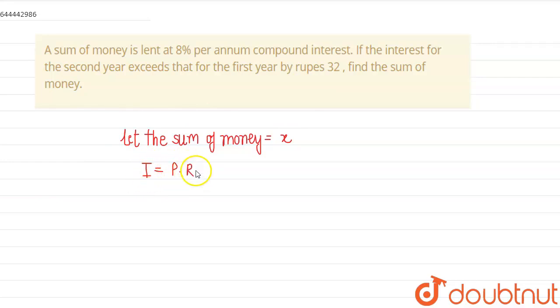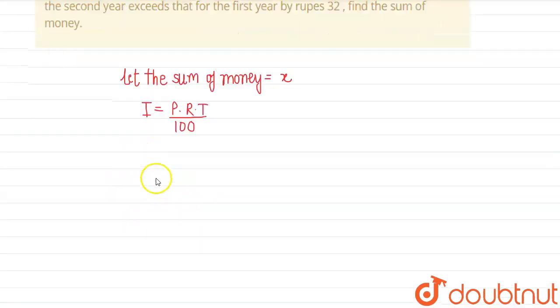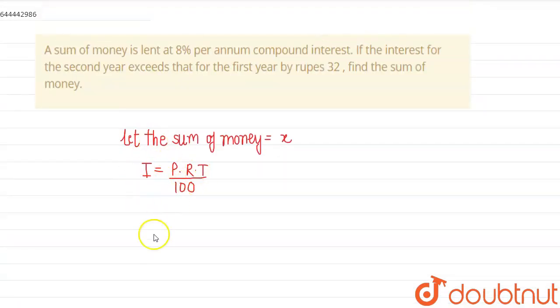P×R×T/100, where P is the principal, R is the rate of interest, T is the time in years, and I is the interest. So we can use this formula and place the values. We have taken the sum of money, that is the principal, as x. R, the rate of interest, is given to us as 8%.